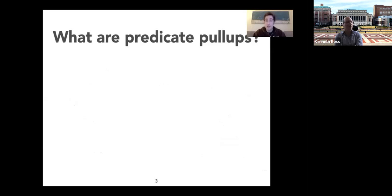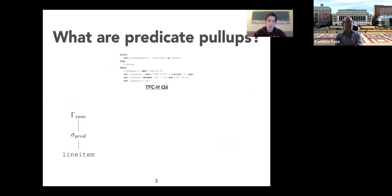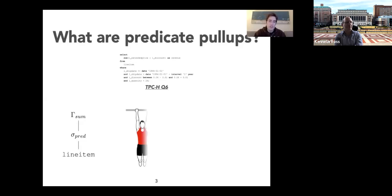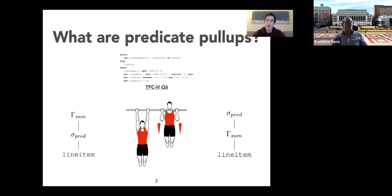What are predicate pull-ups? Many have heard of predicate push-downs. For TPC-H query 6, the textbook implementation performs a scan of the line item table, followed by a selection predicate to filter tuples before the project and aggregate sum. That's standard practice. But through predicate pull-ups, we take the selection predicate, move it further away from the table scan, and do the filtering after all other operators. This may result in wasted work doing sum calculations for values that shouldn't be included.